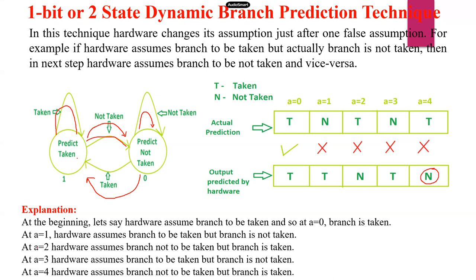With respect to this example, I have given that explanation. At the beginning, hardware assumes branch to be taken. At a equal to 0, branch is taken — both are the same, so taken branch. At a equal to 1, hardware assumes the branch is to be taken, but the branch is not taken — unsuccessful. So the next time, hardware predicts not taken based on the previous result, but the actual prediction is taken — again unsuccessful. At a equal to 3, hardware predicts branch to be taken, but actual prediction is not taken — again unsuccessful.